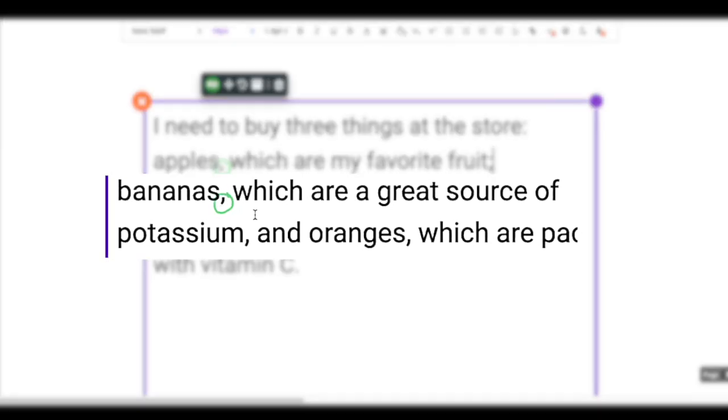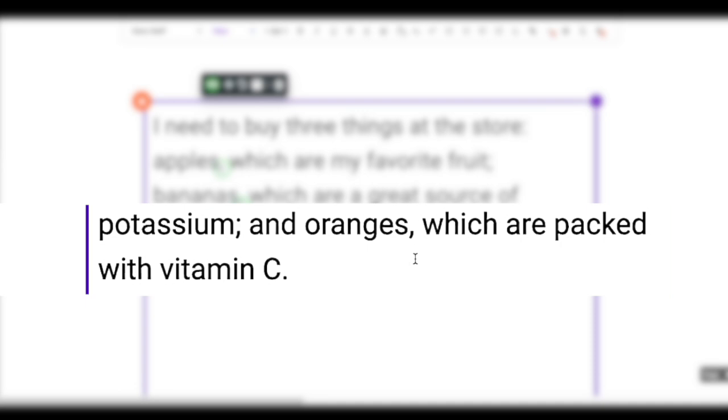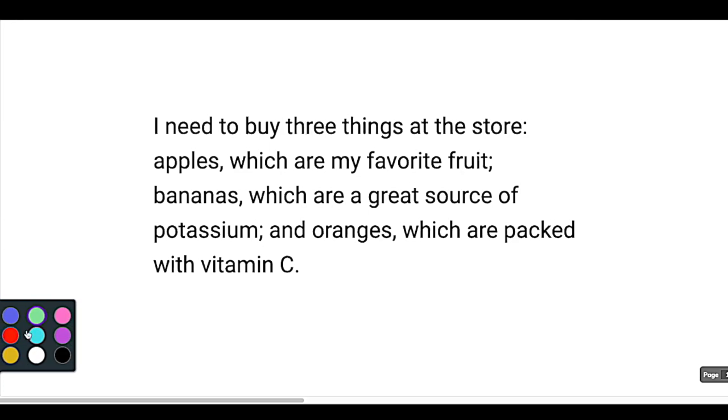Our next item, bananas, which are a great source of potassium. That's our next item. Boom. And then oranges, which are packed with vitamin C, we finished our sentence. So I hope that makes sense. Again, we're separating the items in a list, and we're placing the semicolon at the end of each item, and each item has its own punctuation. More often than not, this is going to be a comma that you see.